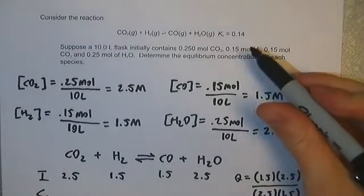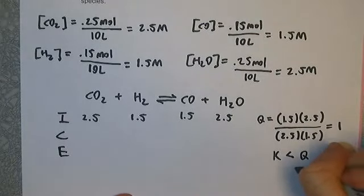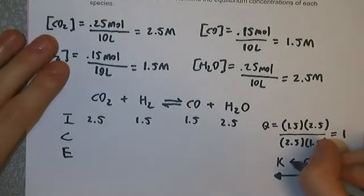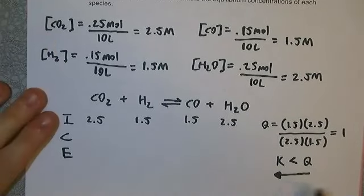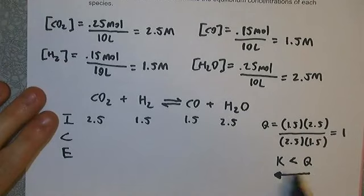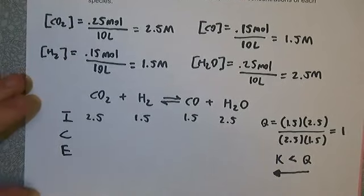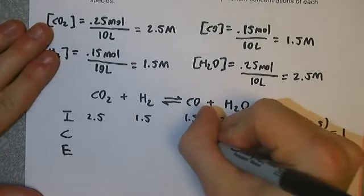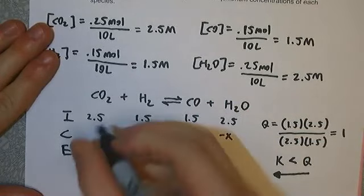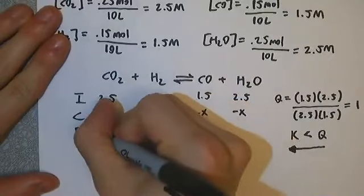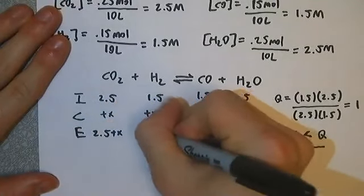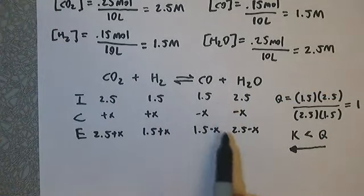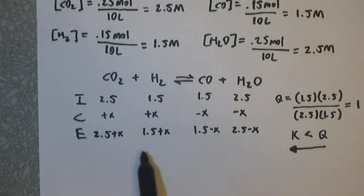So I'm going to go ahead and look at Q. 1.5 times 2.5 divided by 2.5 times 1.5. Q is just products over reactants. They're the same. If you have the same number over the same number, it always equals 1. So let's compare K and Q. Q is equal to 1, and K is 0.14. K is less than Q, so my reaction is going left. If you guessed left from the start, you got lucky. But I did the math, the correct way of doing this problem, and I found out that K was less than Q. Arrowhead points left, so I'm going left.